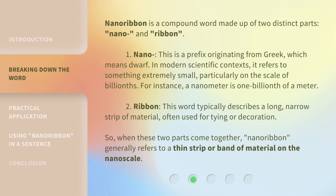Nanoribbon is a compound word made up of two distinct parts: nano and ribbon. First, nano — this is a prefix originating from Greek, which means dwarf. In modern scientific contexts, it refers to something extremely small, particularly on the scale of billions. For instance, a nanometer is one billionth of a meter. Second, ribbon — this word typically describes a long, narrow strip of material, often used for tying or decoration. So, when these two parts come together, nanoribbon generally refers to a thin strip or band of material on the nanoscale.